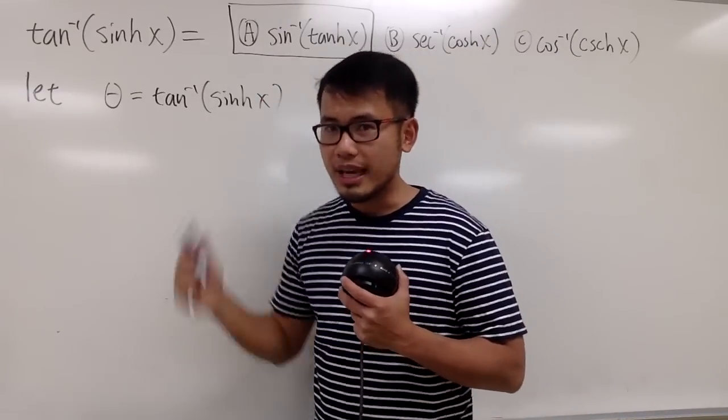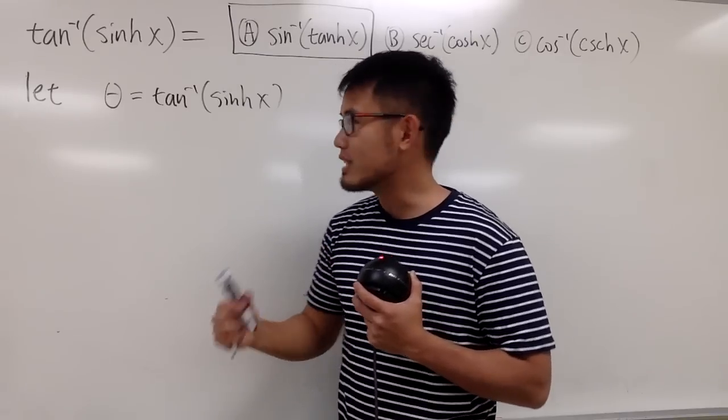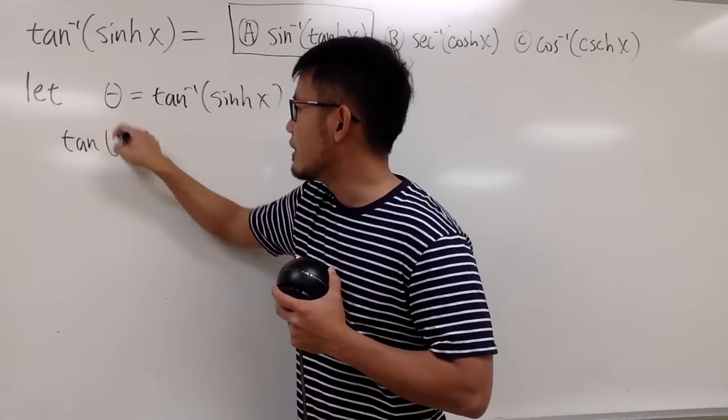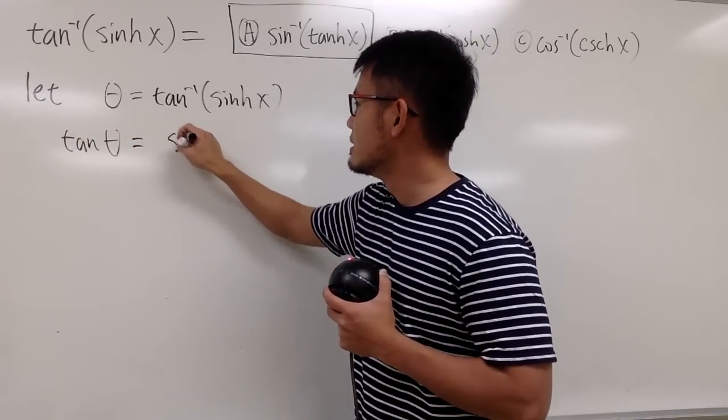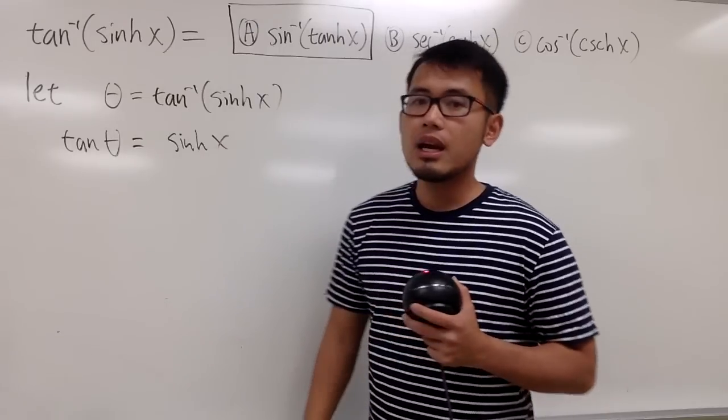From here, we can just take the regular tangent both sides. So in other words, we can say tangent theta is equal to just this. So that's the sinh x. And now, whenever we have tangent of an angle,